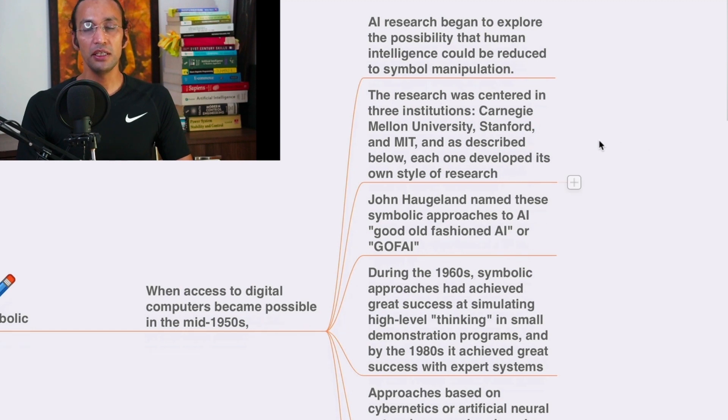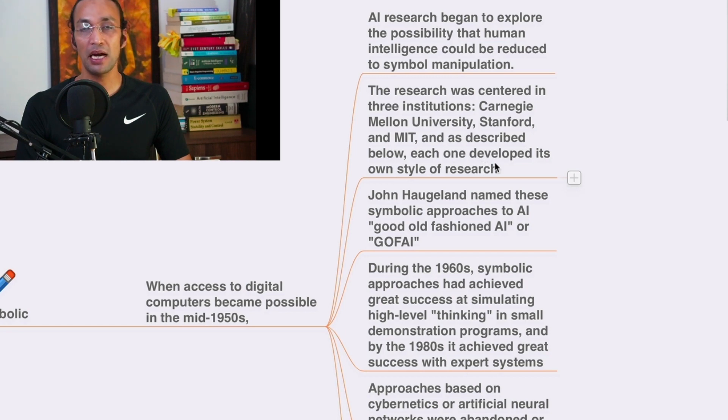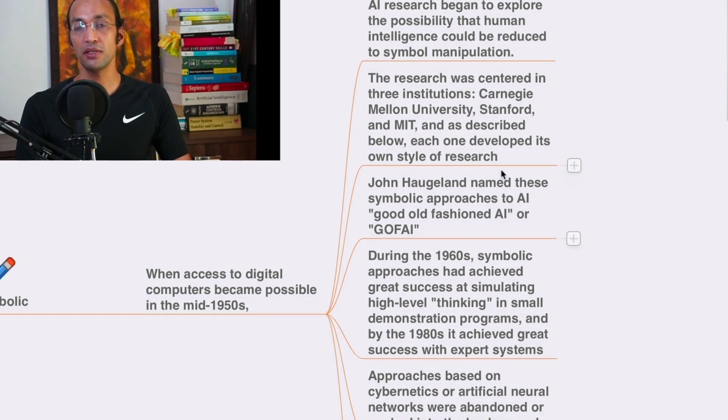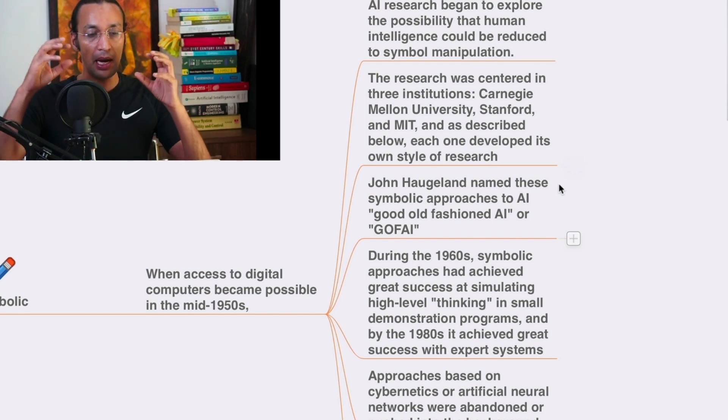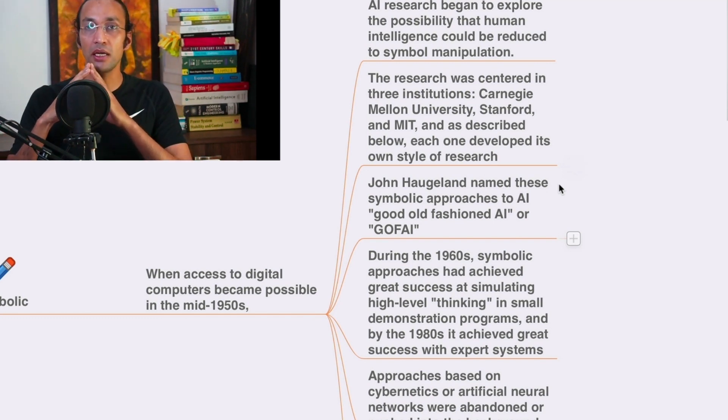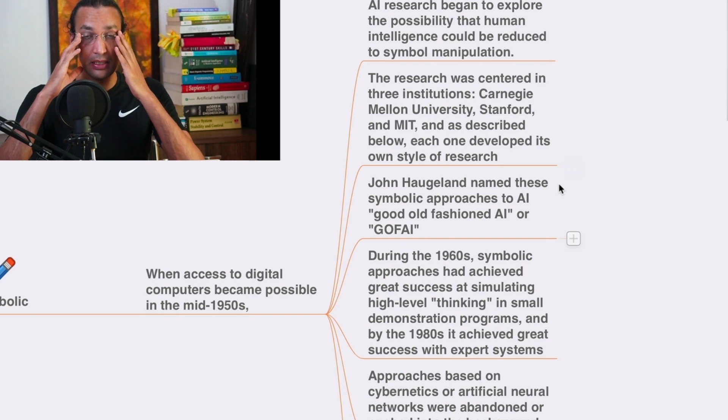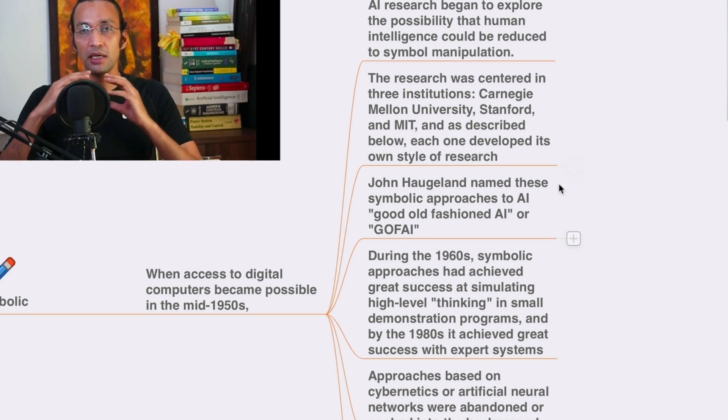Then the research was centered in three institutions called Carnegie Mellon University, Stanford, MIT and as described below, each one of them developed its own style of research. So all these MIT, Carnegie Mellon, Stanford, they made their own style of research in artificial intelligence.